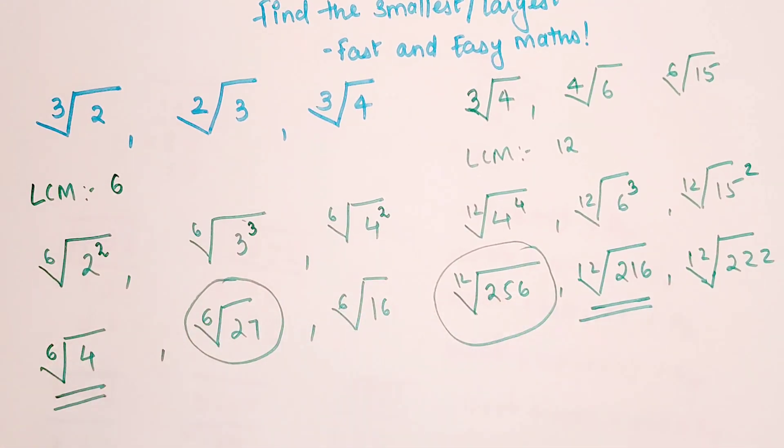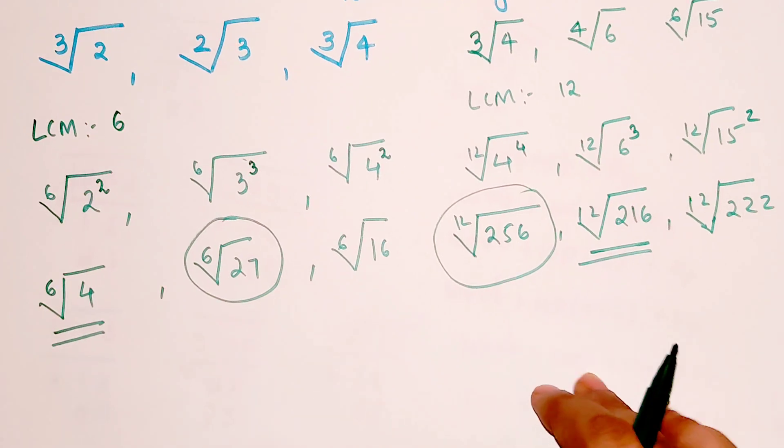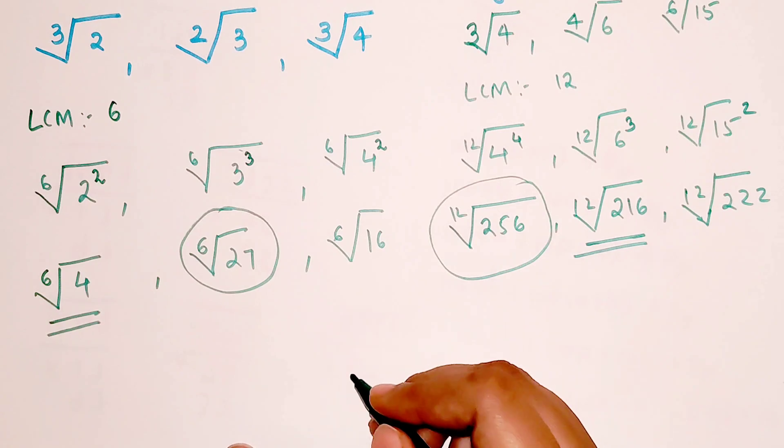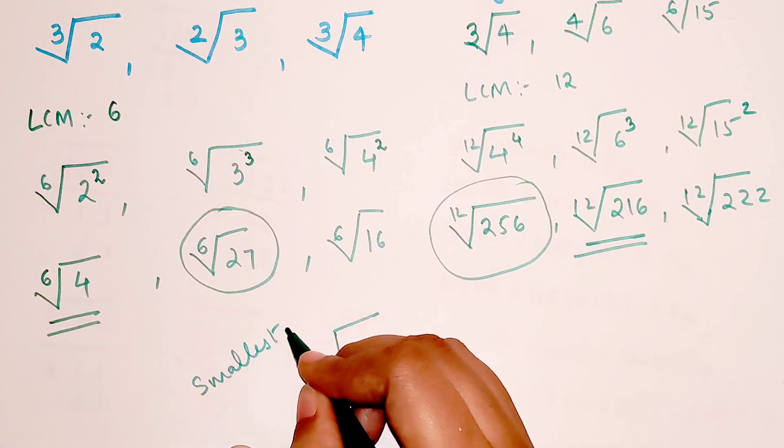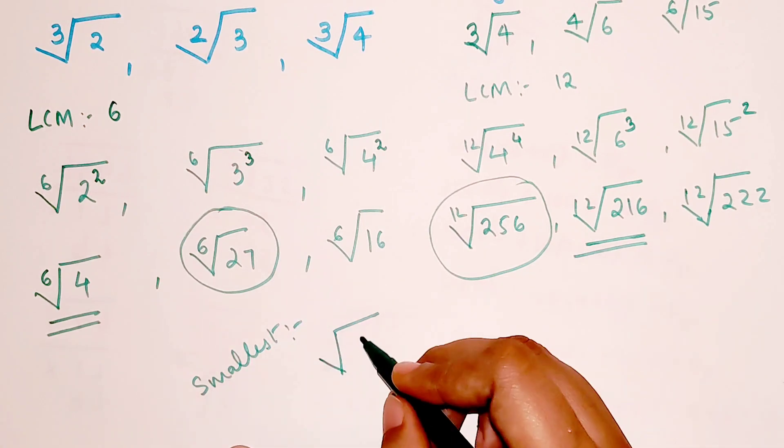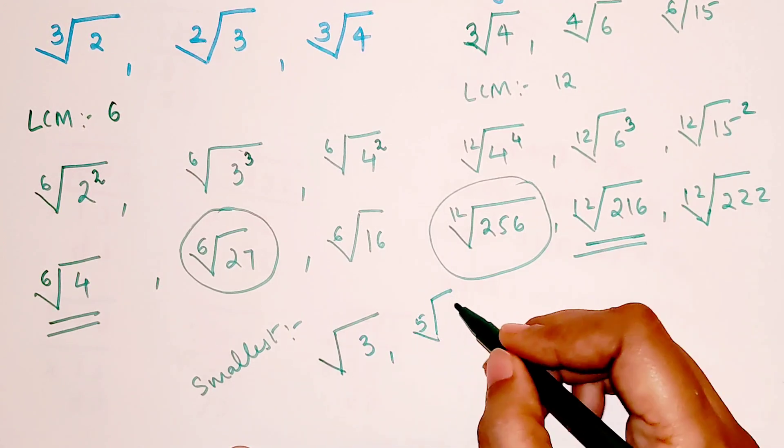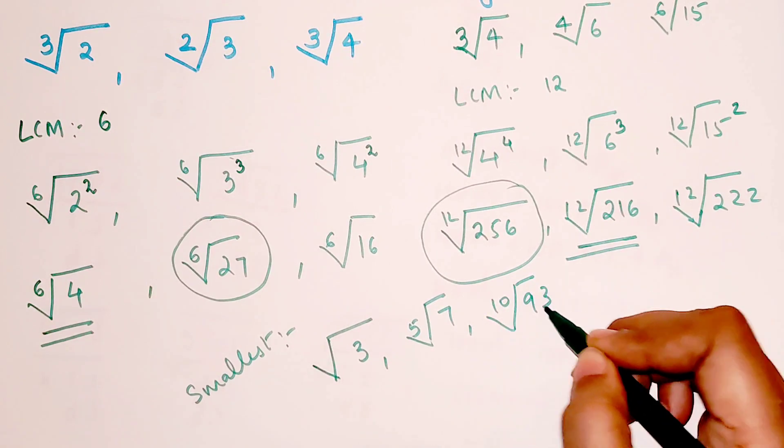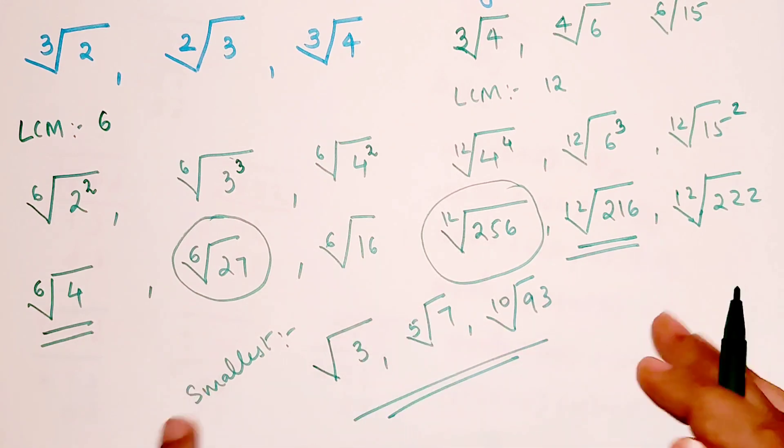Now students, I hope you understood how easy these kind of sums are. So now time for your BIY. I want all of you to tell me which is the smallest amongst root 3, 5th root of 7, and 10th root of 93. Do let me know which one is the smallest amongst the three.